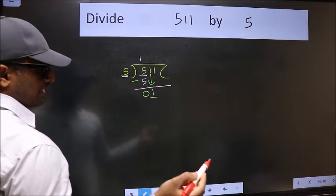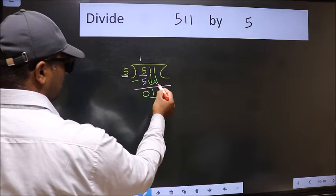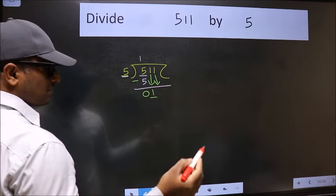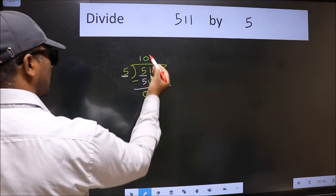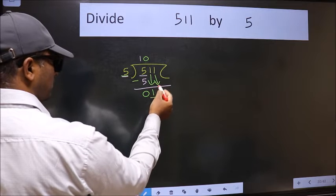So we should bring down the second number. The rule for bringing down the second number is we should put 0 here. Then only can we bring this number down.